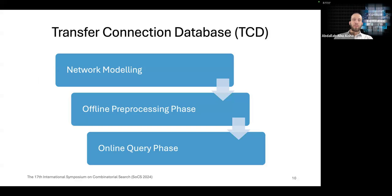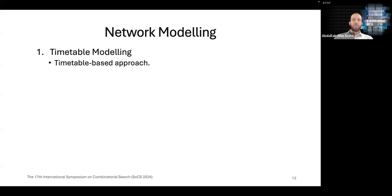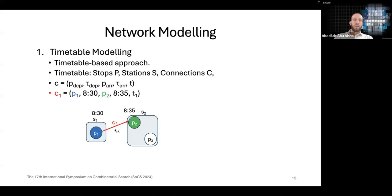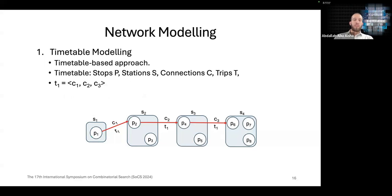Our approach transfer connection database TCD consists of three steps: network modeling, offline pre-processing and online query. We start with timetable modeling where we use a timetable-based approach. Our timetable consists of stops. A typical example is a platform in a train station. The nearby stops can be put into one station if they are close to each other and if they serve the same public transport mode. And we have connections and each connection represents an event where a public transport vehicle departs from some stop at some departure time, arrives at some other stop at some arrival time using some trip. And we have trips T and each trip is a sequence of connections that share the same vehicle.